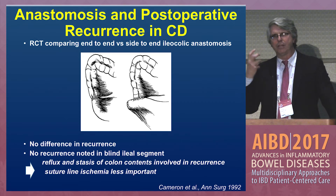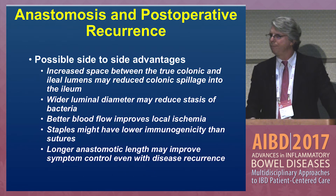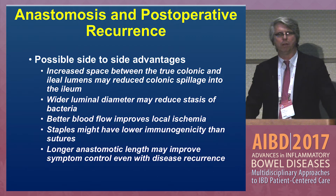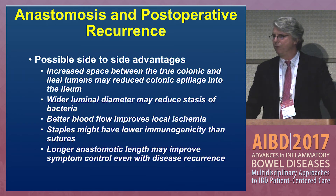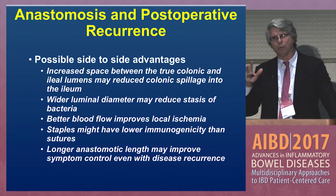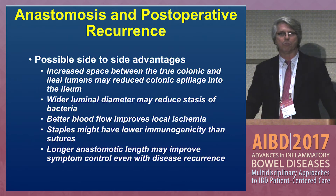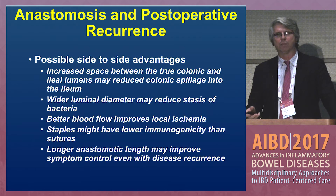This gives us some insight that it has something to do with reflux of colonic contents into the small bowel. So what does this mean for which anastomosis is better? You can argue that a side-to-side anastomosis might be better in this context — because there's increased space between the true colonic and ileal lumens, which may reduce colonic spillage into the ileum; a wider luminal diameter, which may reduce stasis of bacteria; possibly better blood flow; staples might have lower immunogenicity than sutures because they're non-reactive; and a longer anastomotic length may improve symptom control even if there is disease recurrence.